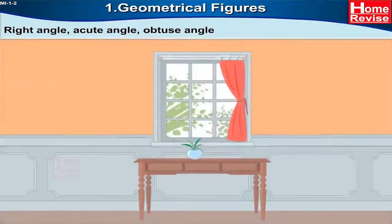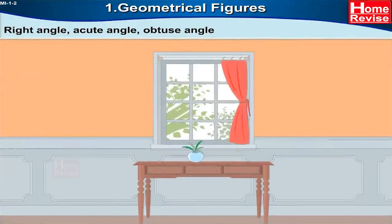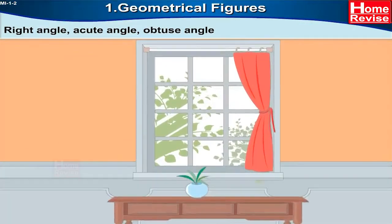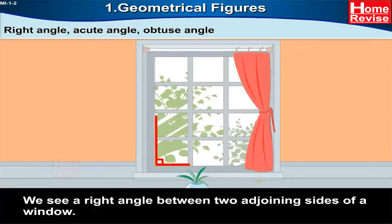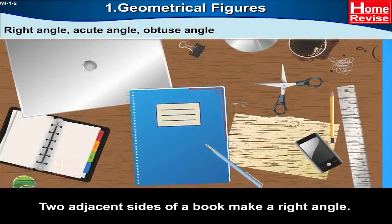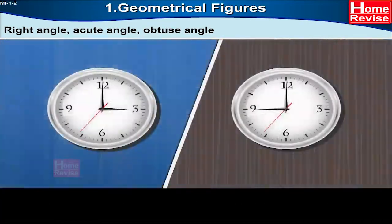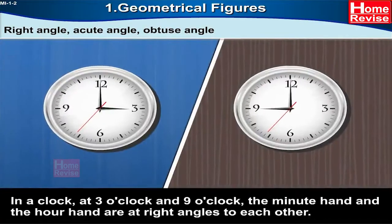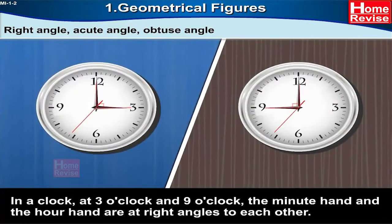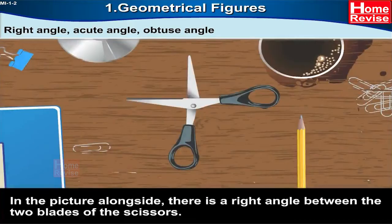Let us learn about different kinds of angles: right angle, acute angle, and obtuse angle. If you notice the window pane, we see a right angle between two adjoining sides of a window. Two adjacent sides of a book make a right angle. On a clock at three o'clock and nine o'clock, the minute hand and the other hand are at right angles. There is also a right angle between the two blades of the scissors.